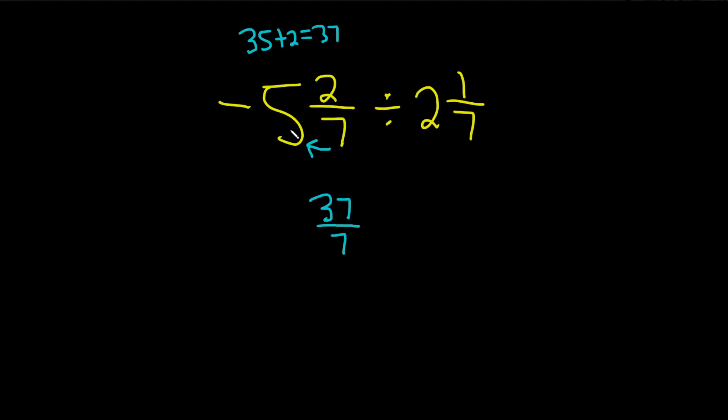Again, 7 times 5 is 35. 35 plus 2 is 37. The negative just kind of hangs out.